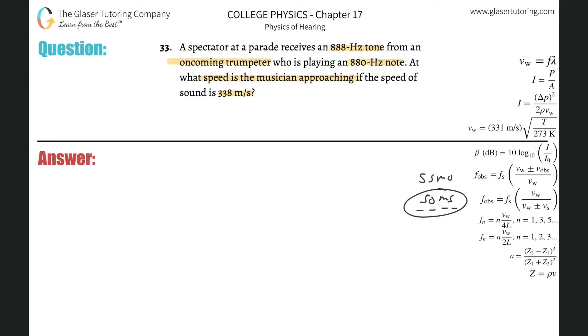Based upon this problem, there's a spectator at a parade and he or she is the one receiving the sound. So we have a stationary observer and a moving source. The trumpeter is the one that is producing the tone or the note. So we have a moving source and a stationary observer, which means we're going to be using the SOMS formula where the signs are on the bottom.